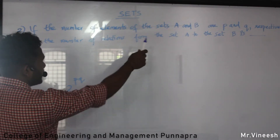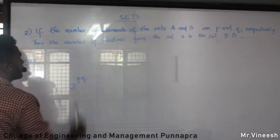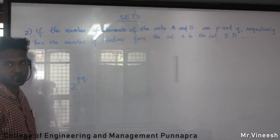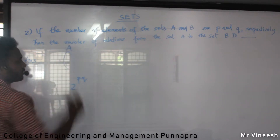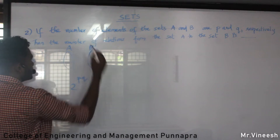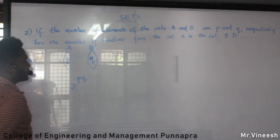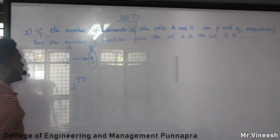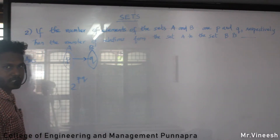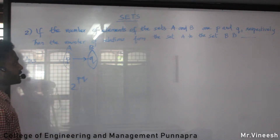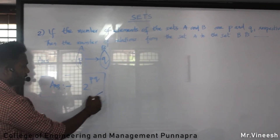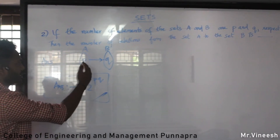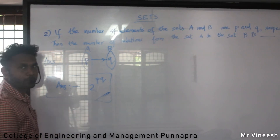The number of elements of sets P and Q respectively — the number of relations from set A to set B is how many? The answer is 2 raised to the power of (p×q). This is the total number of relations from set A to set B. We calculate using the formula 2 raised to PQ.